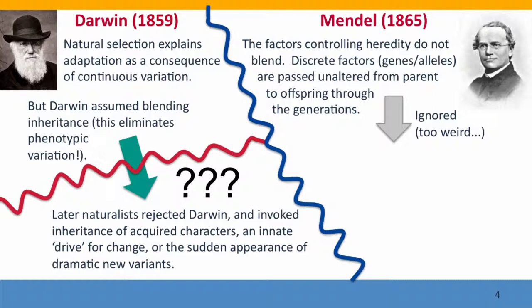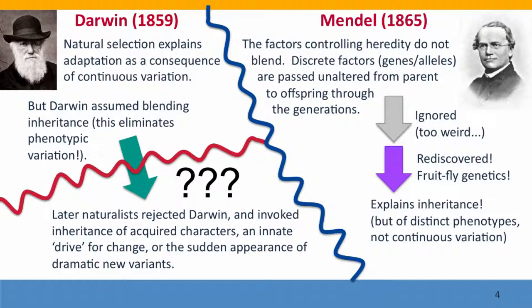At the same time, Mendel's theory was running into problems too — it was basically too weird, too much ahead of its time to be accepted. It wasn't until the beginning of the 20th century that his ideas were rediscovered and gave rise to the very successful field of genetic analysis: the study of how the genes that Mendel had discovered actually worked. This gave rise to genetic studies using the fruit fly and other model organisms, focusing on distinct phenotypes — the discrete, discontinuously varying characters discussed in the last two modules. So the Mendelian geneticists could explain inheritance, but they were explaining inheritance of discrete characters, not of continuous variation.